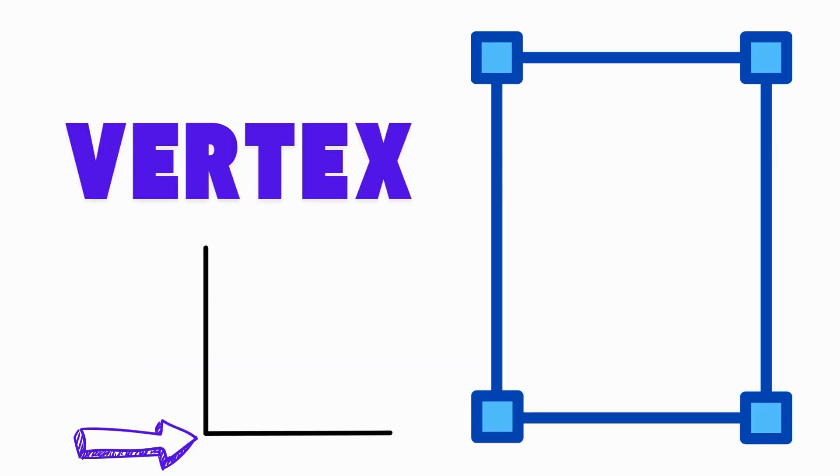A vertex is where two sides meet to make a corner. The plural is vertices. That means more than one vertex. Say, vertex. Touch your finger to a corner of your desk or paper.